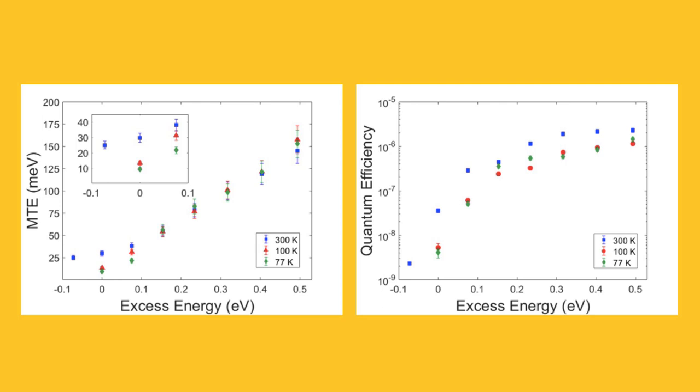At zero excess energy, we see that for the cryogenic measurements, the MTE is well below 25 millielectron volts and actually reached a minimum of 9 millielectron volts. While this isn't the record 5 millielectron volts that has been previously measured, that measurement was performed at a much colder temperature and we suspect we could achieve the 5 millielectron volts if we were able to cool the sample down to the same temperature.